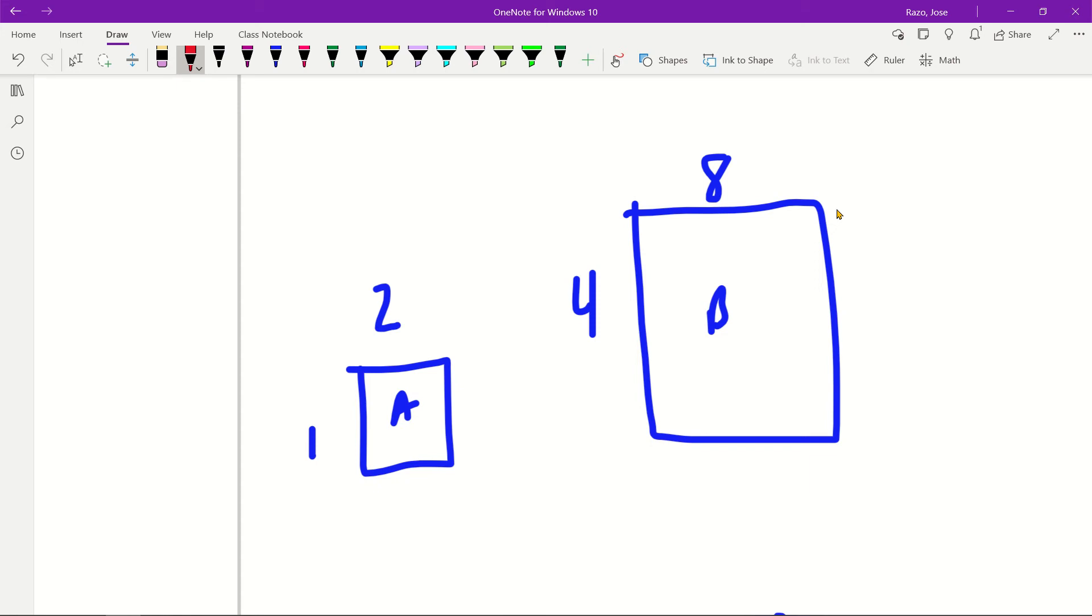In this case we have a rectangle, and in this rectangle we have sizes to identify. You have one and two for rectangle A, and four and eight for rectangle B.